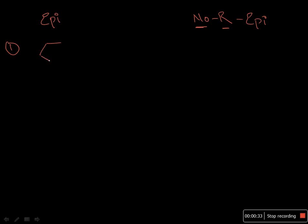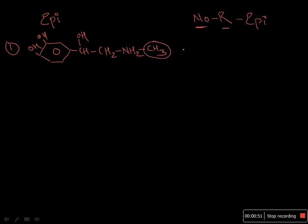So the first difference lies in the structure. Epinephrine and norepinephrine both have benzene rings because they are catecholamines. This benzene ring is attached to the methyls as well as the amino group. The difference is that epinephrine is methylated, while norepinephrine is also a catecholamine with benzene, amino groups, and hydroxyl groups, but is not methylated.